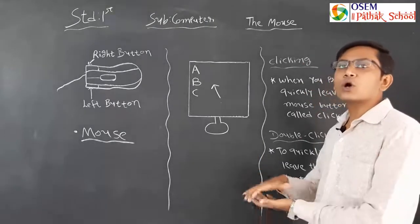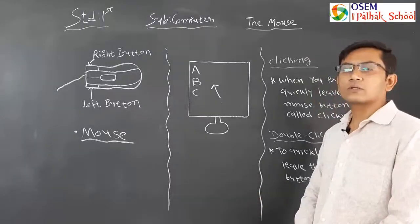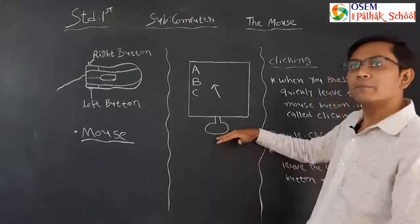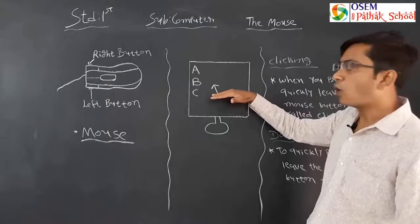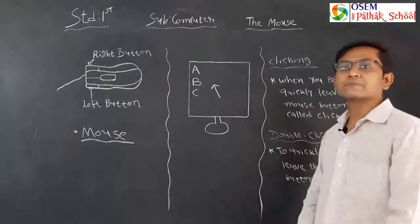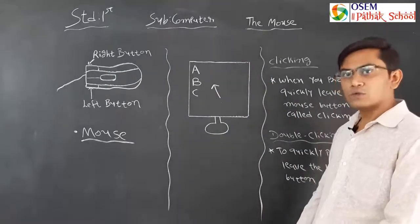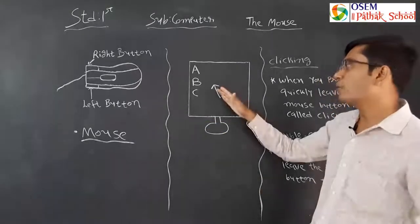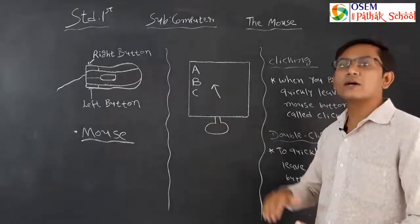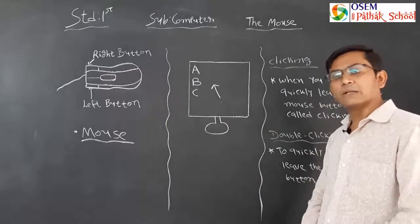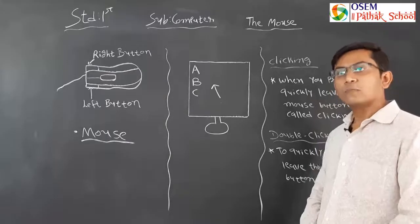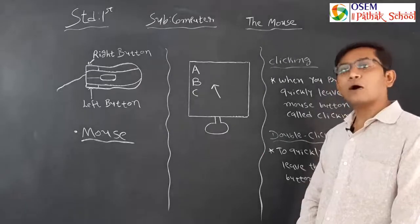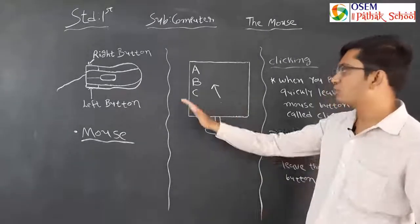The mouse pointer moves according to how you move the mouse on the mouse pad. When you move the mouse upward on the mouse pad, the arrow on the screen will also move upward. When you move the mouse downward, the arrow moves downward. Similarly, when you move the mouse to the left, the mouse pointer also moves to the left side of the monitor.